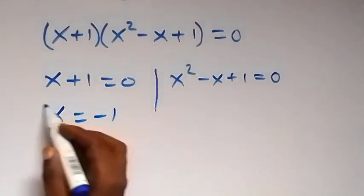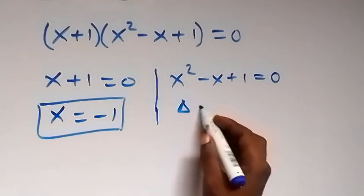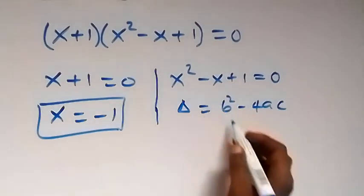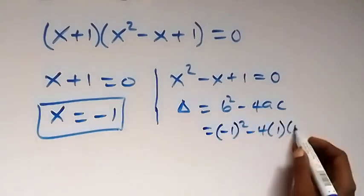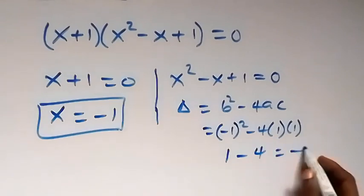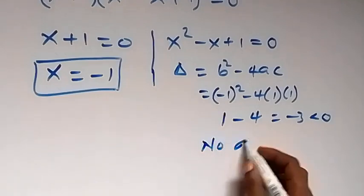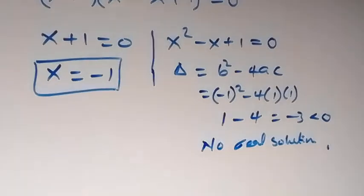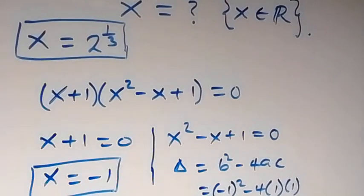We have x plus 1 equals to 0, or x squared minus x plus 1 equals to 0. On this side, x equals to minus 1. To check if the quadratic will give us a solution, let's see the discriminant, which is b squared minus 4ac. Here, b is minus 1, so this becomes minus 1 squared, minus 4 times a, which is 1, times c, which is 1. Minus 1 squared is 1, minus 4 gives minus 3, and this is less than 0. So it implies there is no real solution on this side. The only solutions we have are x equals to 2 raised to power 1 over 3, and x equals to minus 1.